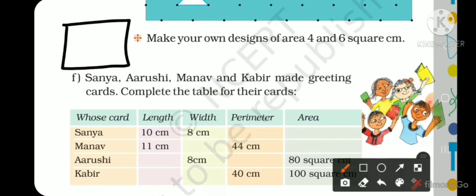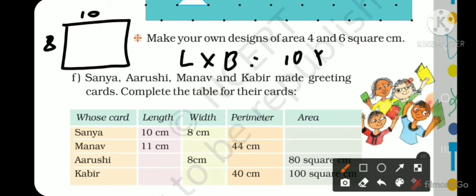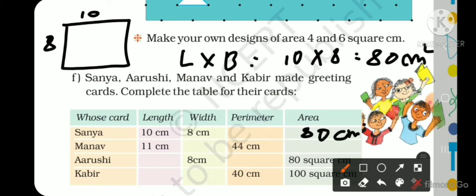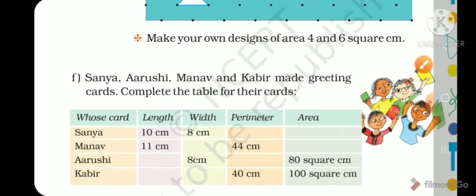Now, as you know, length is 10 cm and width is 8 cm. The area of a rectangle is length multiplied by width. So 10 × 8 = 80 square centimeters. So the area is 80 square centimeters.